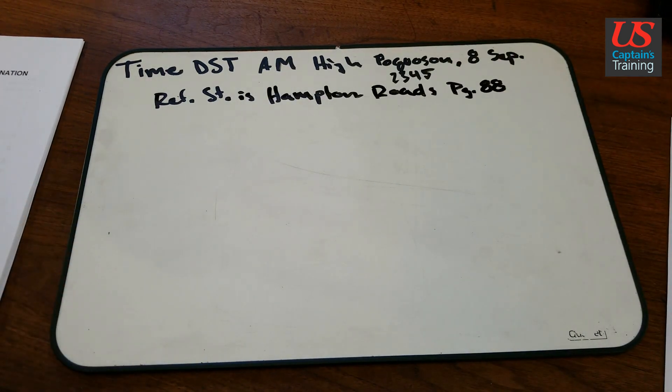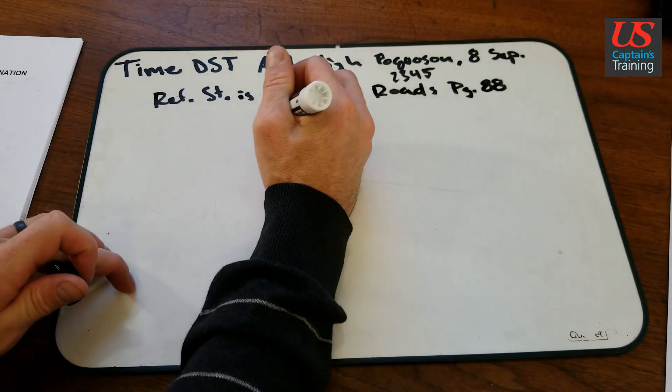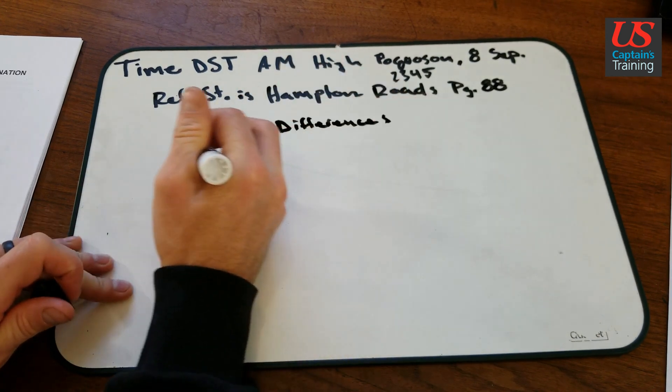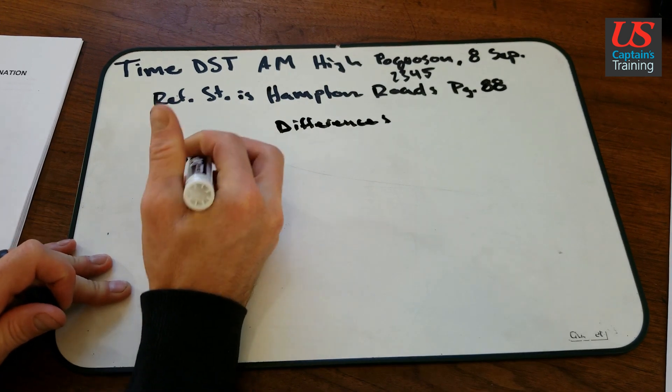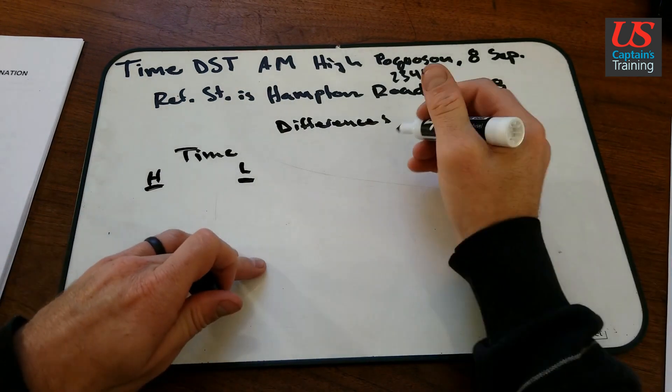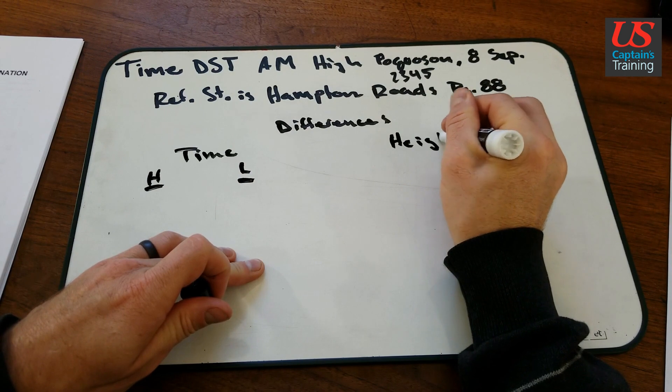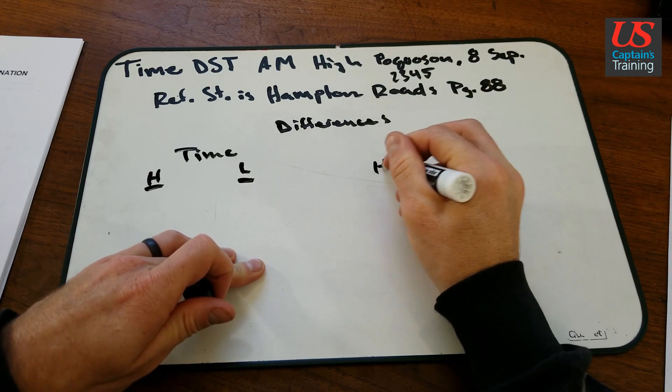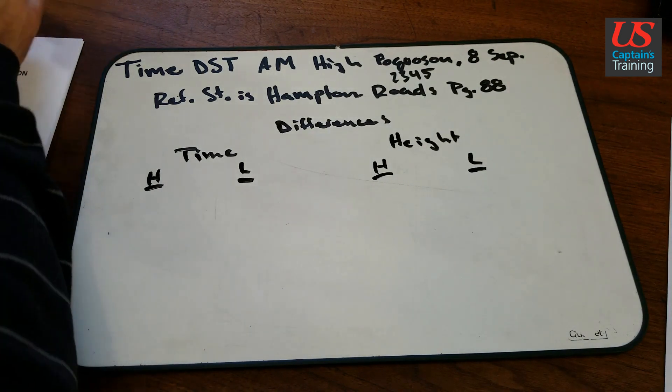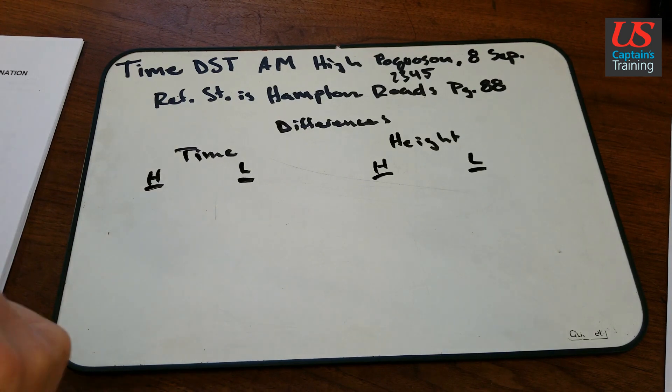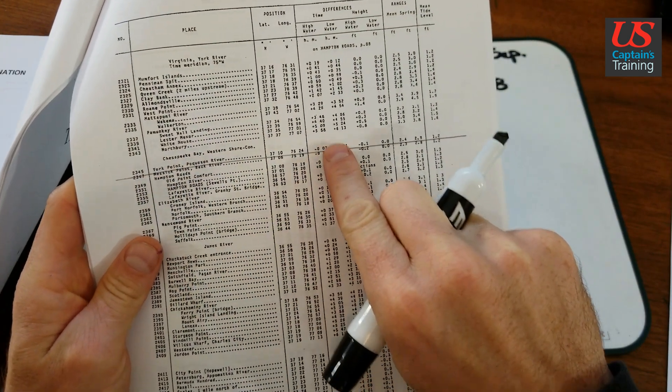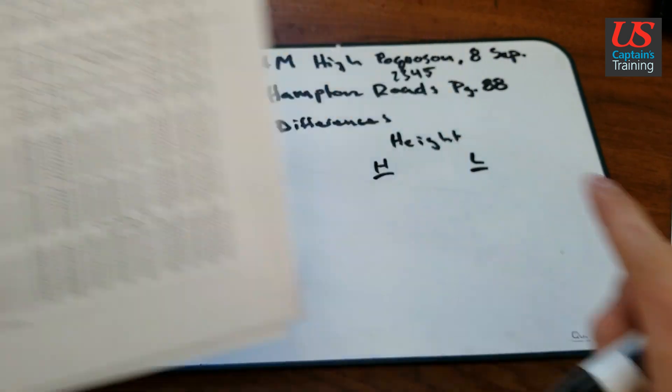So now we're going to go into table 2. Let's get our differences. So we are looking at differences. Time difference, time of the high water, time difference low water, and height difference high water, height difference low water. So we get our table 2. From the differences, right here we found 2345, came over in the differences column. I'm going to record all these so we have them.